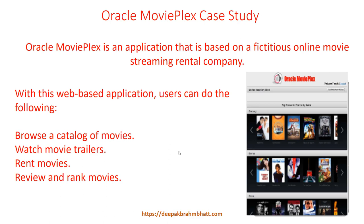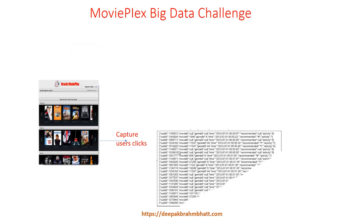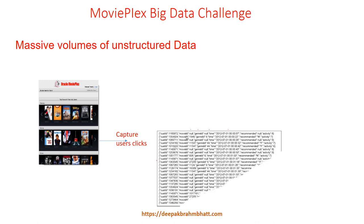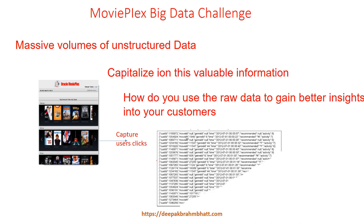In the next few slides, you'll learn about the requirements for this application and the challenges we will go through to make it a very user-friendly website. Each click has been captured — what you're seeing here is the movie ID, the time, whether they recommended this movie, and what activity it is. Each and every click is captured, which is why the application generates massive volumes of unstructured data describing user behavior and application performance. How can this company fully capitalize on this valuable information to make the right movie offers at the right time, better understand viewing trends of various customer segments, and ultimately improve profitability?